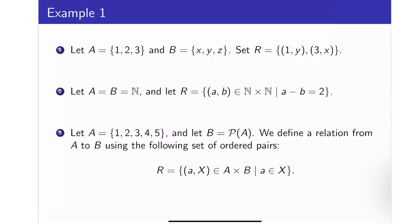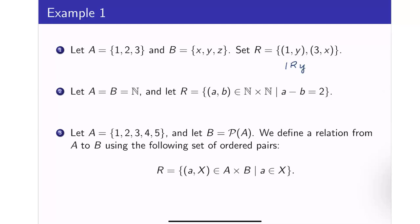Let us consider this: suppose we have A = {1, 2, 3} and B = {X, Y, Z}. The set R here contains two elements only: (1, Y) and (3, X). So therefore, we say that 1 is related to Y because (1, Y) is an element of R, and we also say that 3 is related to X. We can also say that 3 is not related to Z because (3, Z) is not in R.